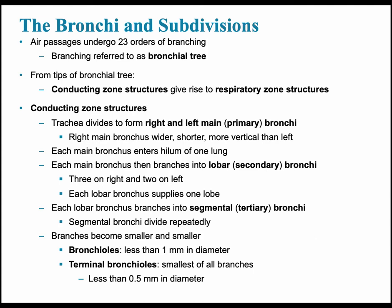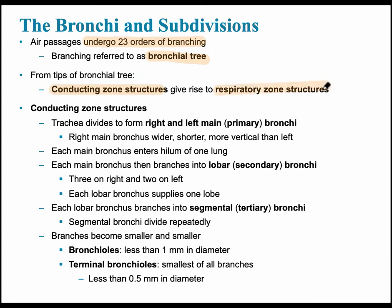Moving on through our journey of the respiratory tract, the lower respiratory tract — the bronchi and their subdivisions undergo 23 orders of branching. This branching is referred to as the bronchial tree. As they branch, the tubes get smaller and smaller. The tips of the bronchial tree begin as conducting zone structures and eventually lead to the respiratory zone structures.